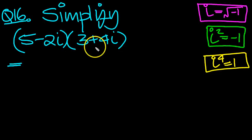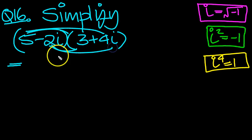Bracket 5 minus 2i times bracket 3 plus 4i. We've got to simplify this then. So let's just draw our four lines just to remind ourselves how to expand the bracket.